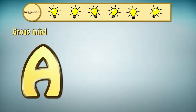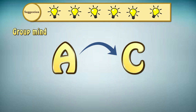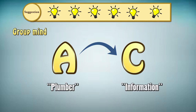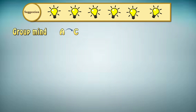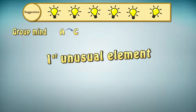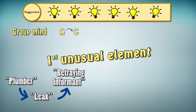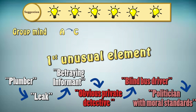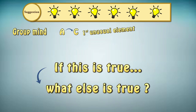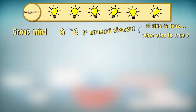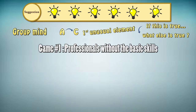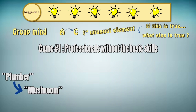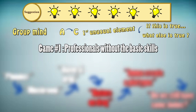If the original suggestion is 'plumber,' instead of exploring the theme by saying 'plumber, leak, information,' you will immediately say 'plumber, information' — that's how you explore an idea real fast. Then, just like in organic improv, you will try to find the first unusual element and play with it. For example: plumber, leak, betraying informant, obvious private detective, blind bus driver, politician with moral standards. You see that with the detective, we had an unusual element. From there, the players use the mechanism of 'if this is true, what else is true.' With a few words, the improvisers will discover a game they can reuse later — a scene with professionals who don't have the expected skills for their job.